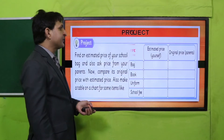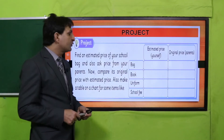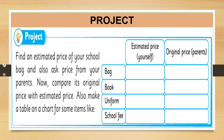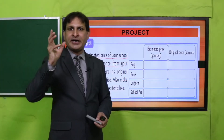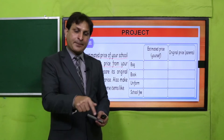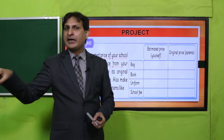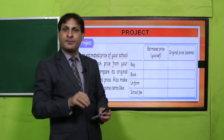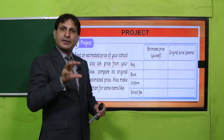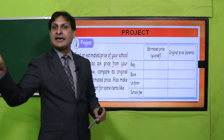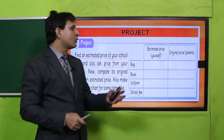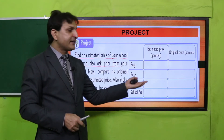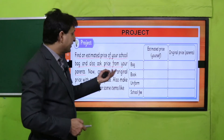Students ایک project ہے جو آپ نے گھر پہ complete کرنا ہے پھر submit کرنا ہے۔ Find and estimate the prices of your school bag and also ask the price from your parents۔ آپ نے estimate کرنا ہے — guess کرنا ہے۔ جیسے previous two lessons میں activities کروائی تھیں جہاں آپ numbers کو guess کرتے ہوئے cups یا glasses میں ڈال رہے تھے، اسی طرح اپنے bag کی price estimate کریں، پھر parents سے actual price پوچھیں، پھر اسے round off کریں to nearest hundreds یا tens۔